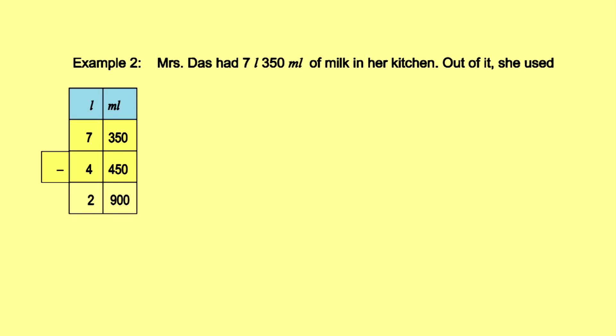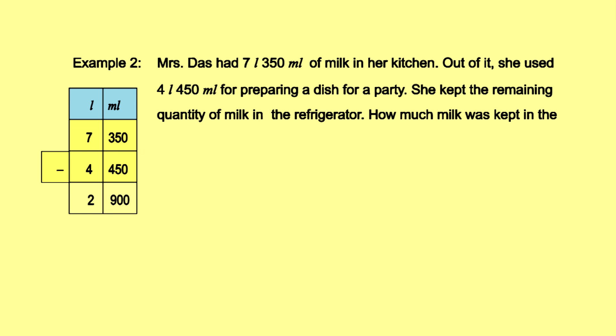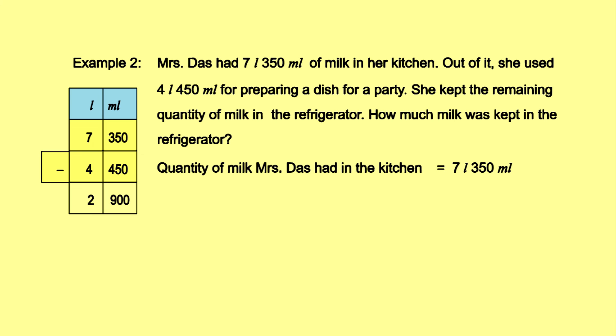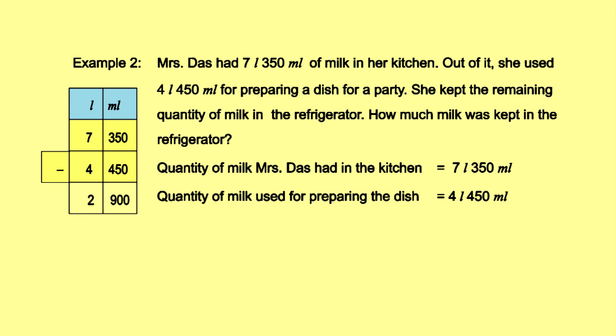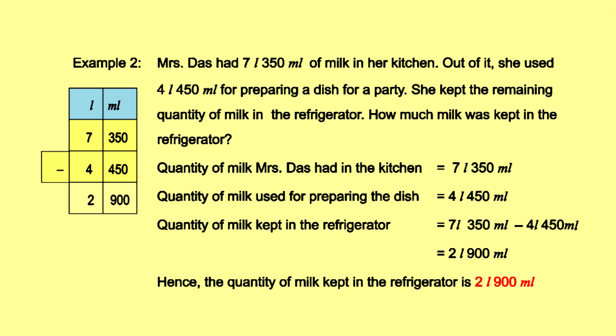Example 2: Mrs. Das had 7 liters and 350 milliliters of milk in her kitchen. She used 4 liters and 450 milliliters for preparing a dish for a party, and kept the remaining milk in the refrigerator. Quantity of milk in kitchen = 7 L 350 mL. Milk used = 4 L 450 mL. Milk kept in refrigerator = 7 L 350 mL − 4 L 450 mL = 2 liters and 900 milliliters.